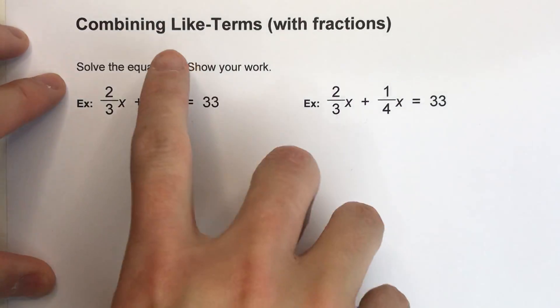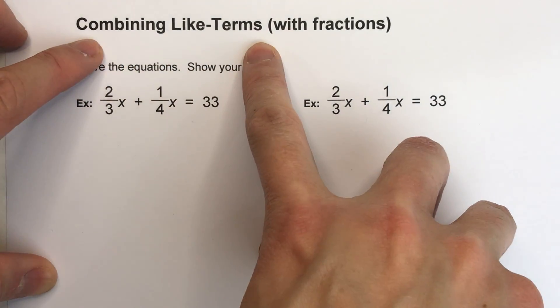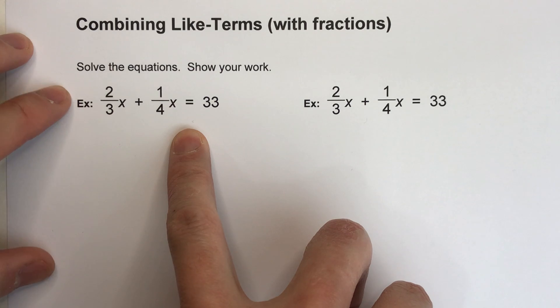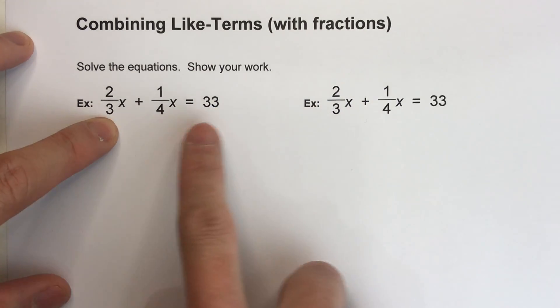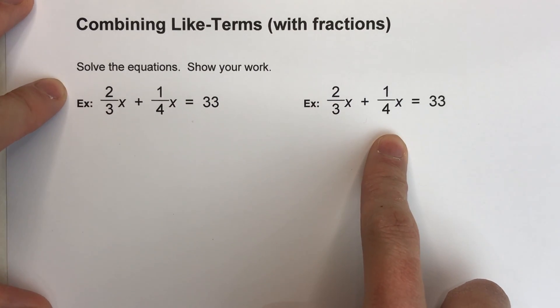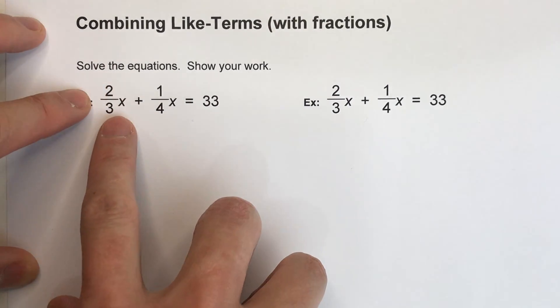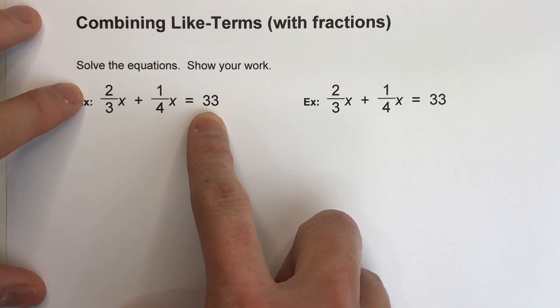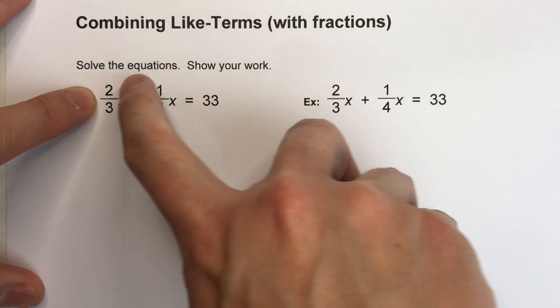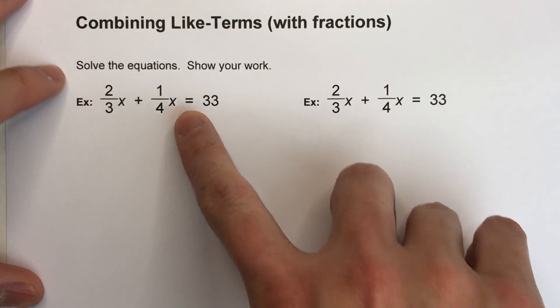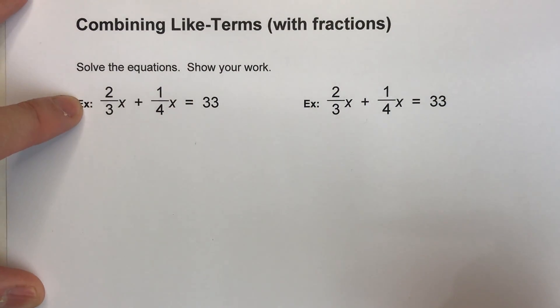So today, I'm going to show you how to solve algebra equations where you have to combine like terms, but there's also fractions in them. And I'm going to show you how to do it in two different ways, and you can just choose whichever method works best for you. So we've got 2/3x plus 1/4x equals 33, and we know since we've got multiple groups of x's on the same side of the equal sign, our first step is to combine them together.